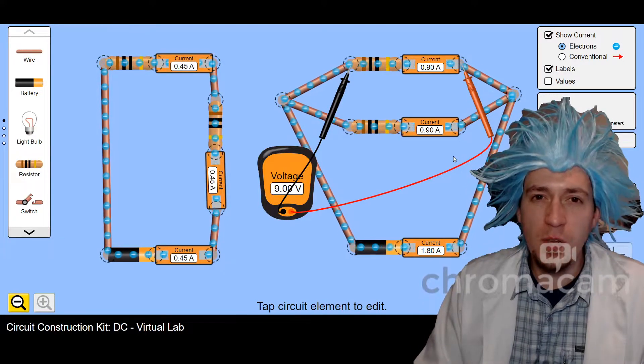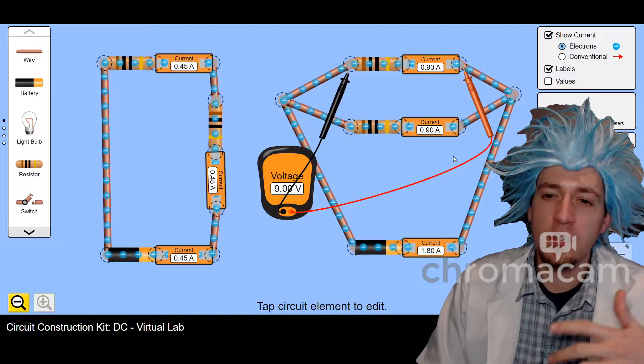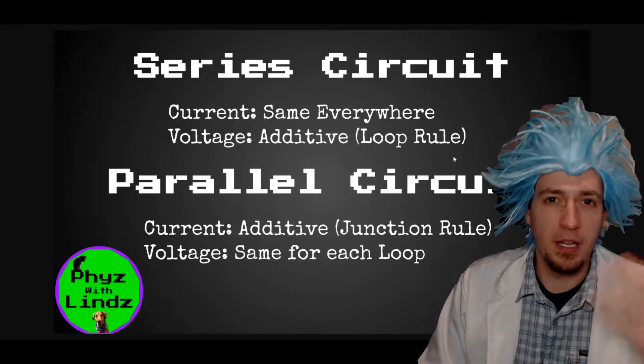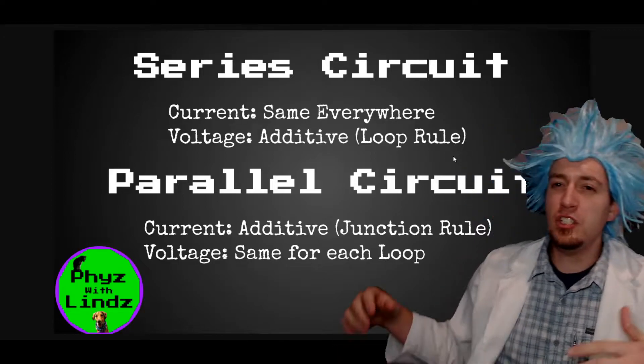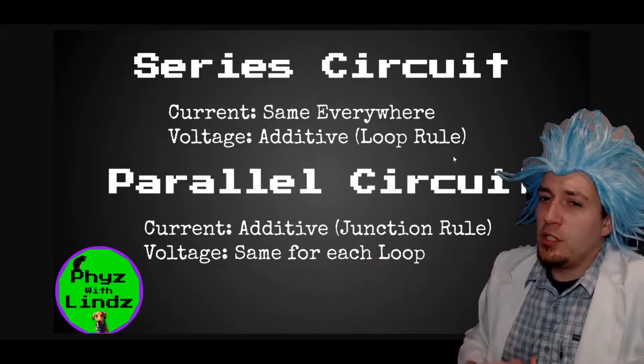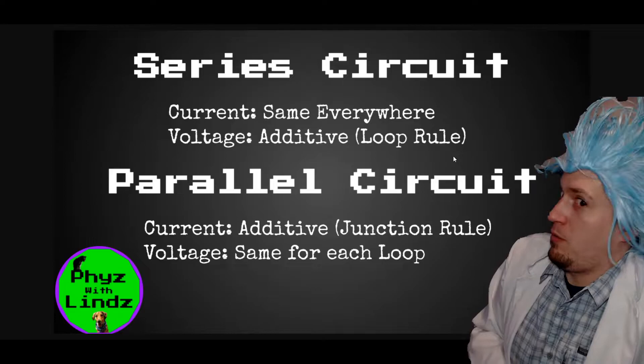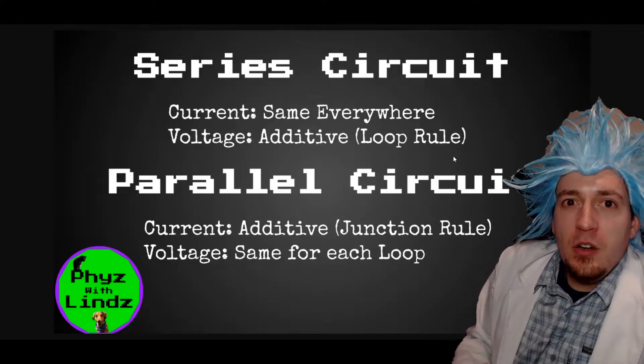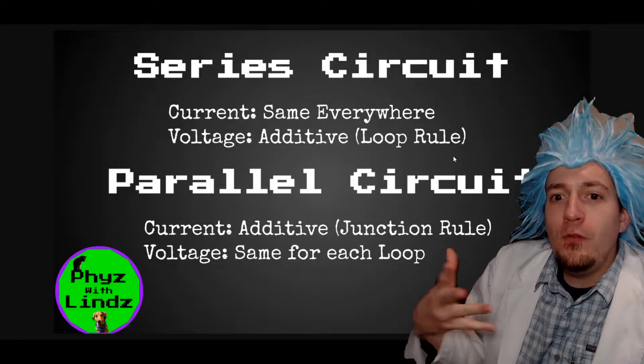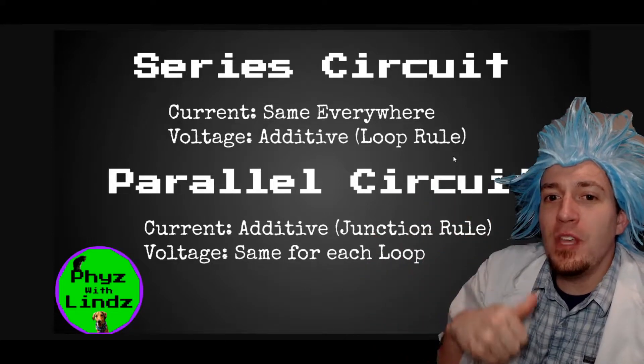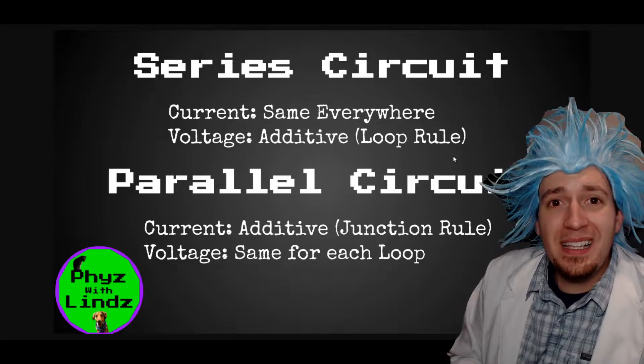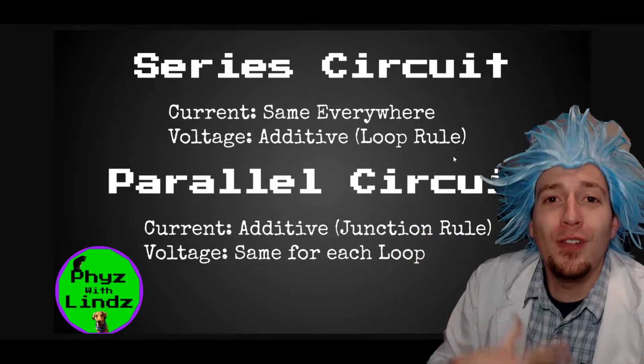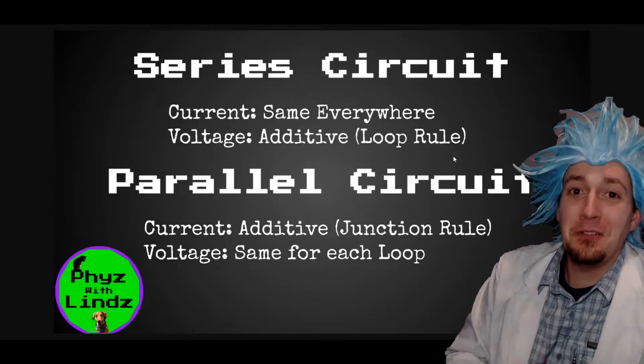It would be so convenient if there was some way for us to just have like a summary of all of this information. Just like if someone could just put up a graphic that would just surmise... Look at all this! So for our series circuit and current, we're getting the same everywhere. But the voltage is additive, and that's something called the loop rule. What it says is if you start the battery and get back to the battery, you must lose all of the energy you've gained. Loop rule.